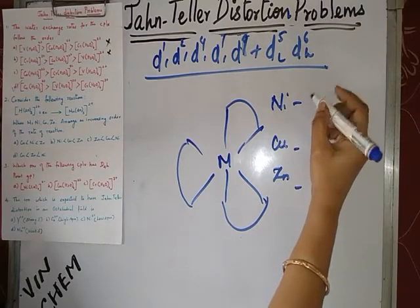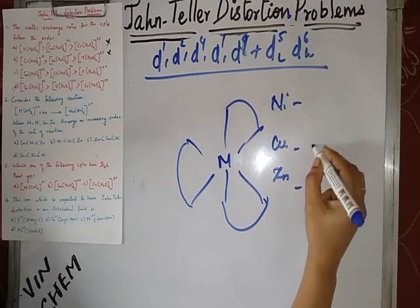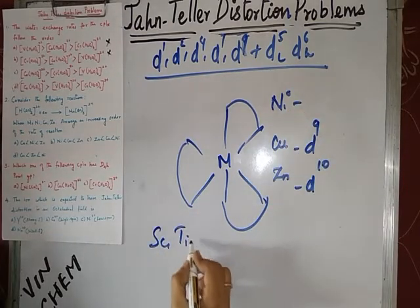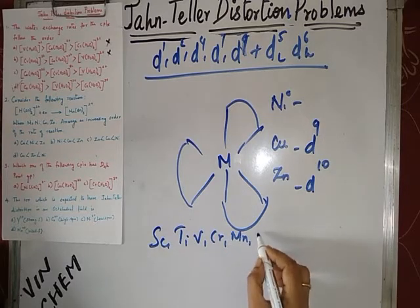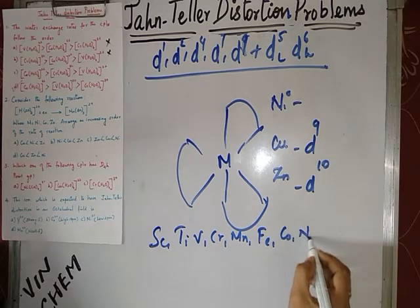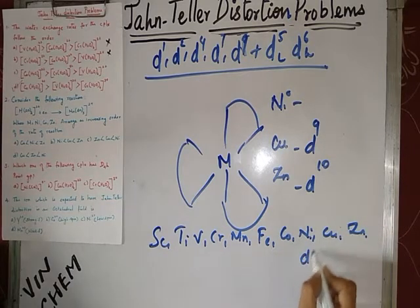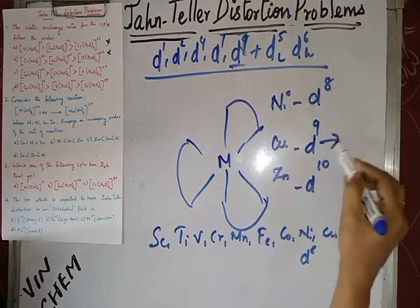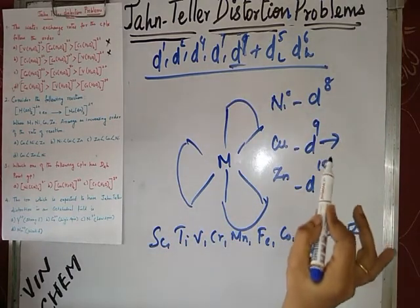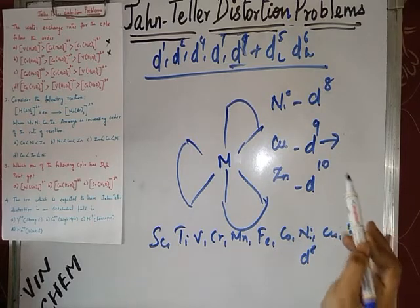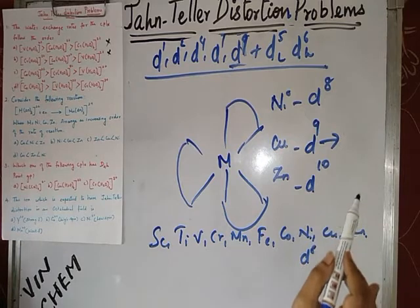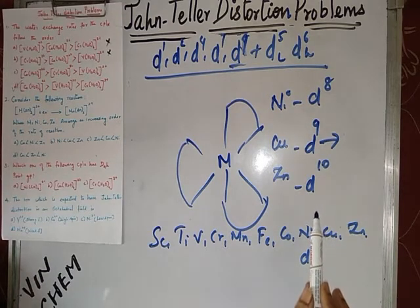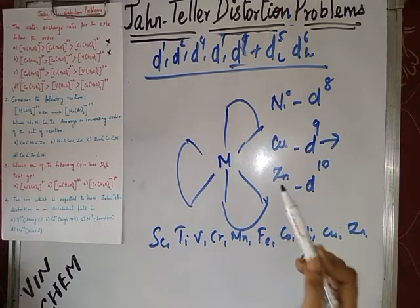Let us check the d-electron configurations. Scanning the periodic table: nickel is d8, copper is d9, and zinc is d10. Copper is d9, which has Jahn-Teller distortion. Nickel is d8 — confirming it is d8, there is no distortion. Zinc is d10 — also no distortion. So only copper is having Jahn-Teller distortion, and we need to arrange the rate of reaction for all three.